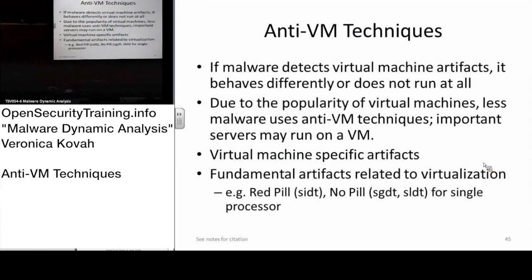Briefly about anti-VM techniques: when a system runs in a VM, there are artifacts left on it. For example, if you run VMware, the VMware tools run on your VM. Malware can look at those artifacts — whether a specific process is running or a network card is named something specific — and decide it's on a VM rather than a physical machine, then decide not to run.